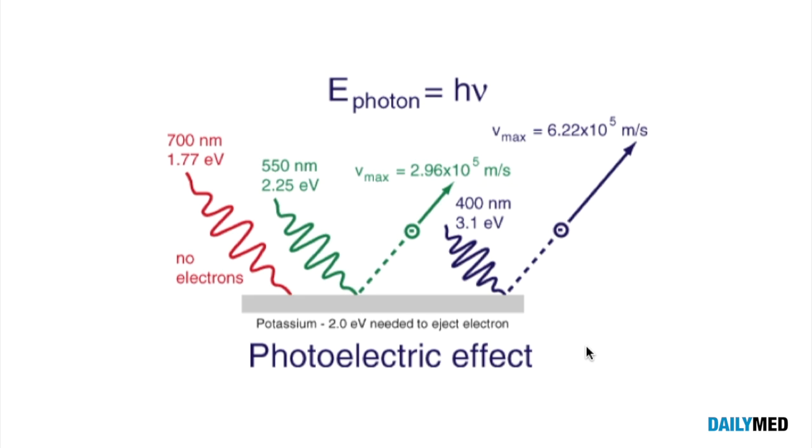A photon is a particle, it has no mass, it has no charge, and it travels at the speed of light.